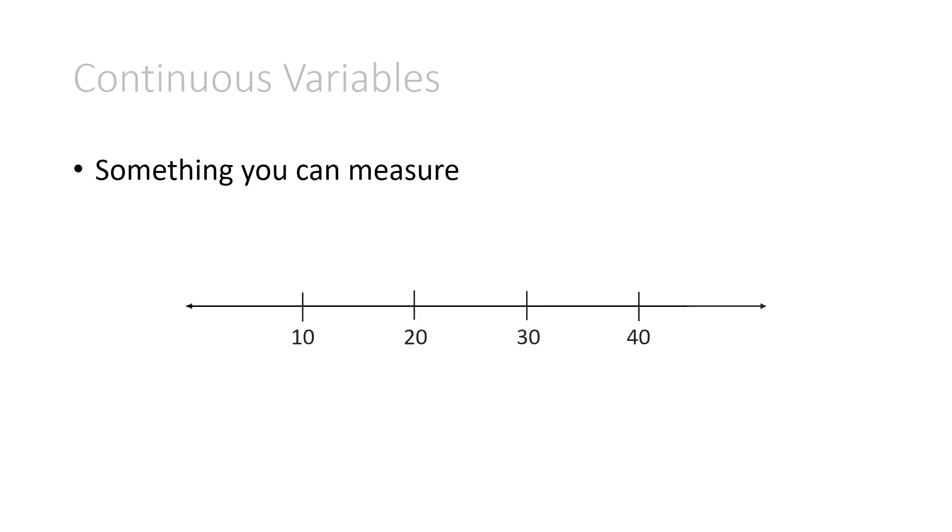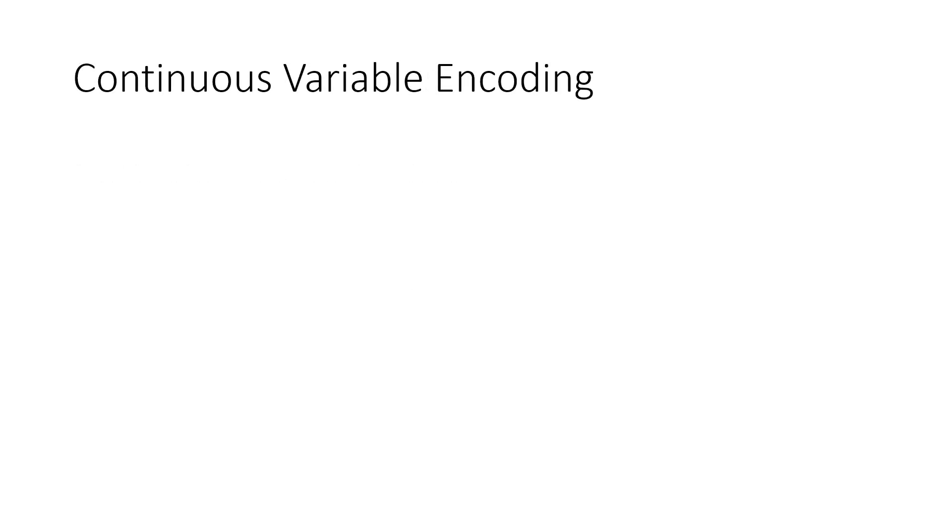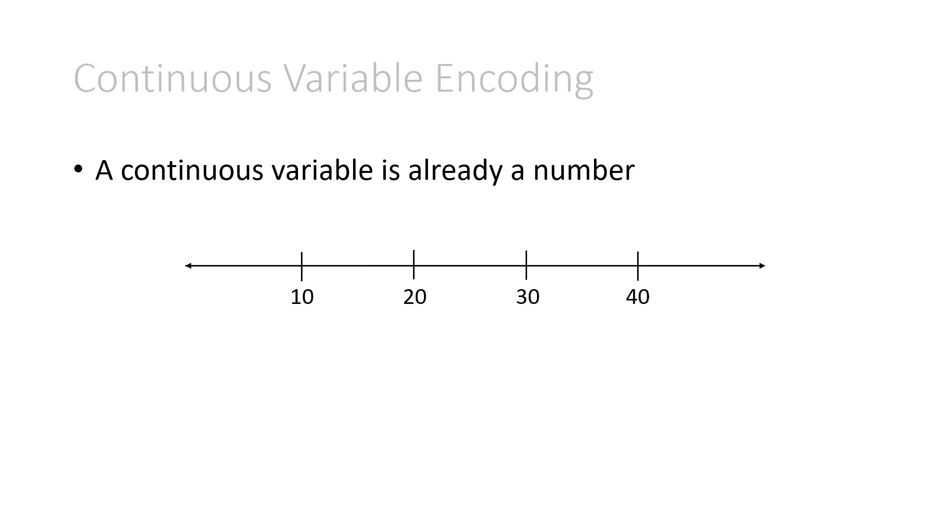Firstly, continuous variables. A continuous variable is something you can measure, like you can put it on this number line, and a great example would be the weight in kilograms. Now let's look at a continuous variable encoding. A continuous variable is already a number. By definition, it goes on this number line, maybe it's the weight in kilograms, and it's numerical. That's exactly what we want. So no encoding is necessary, just leave it as is.